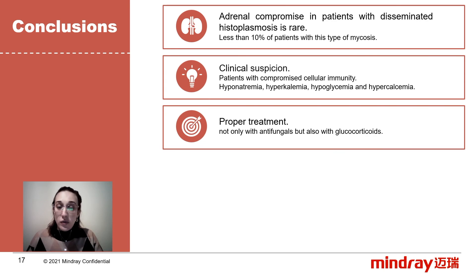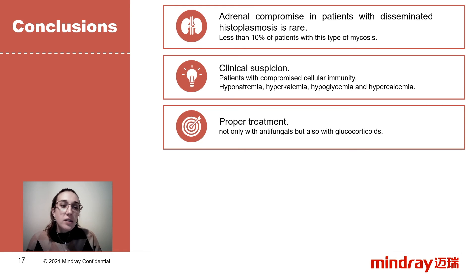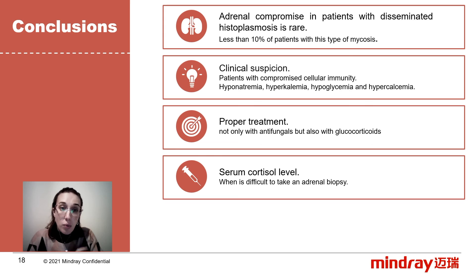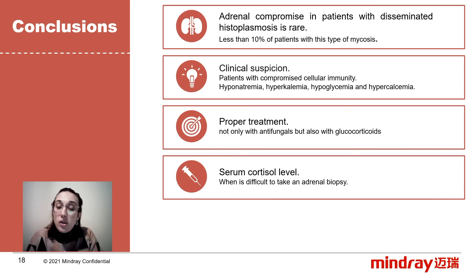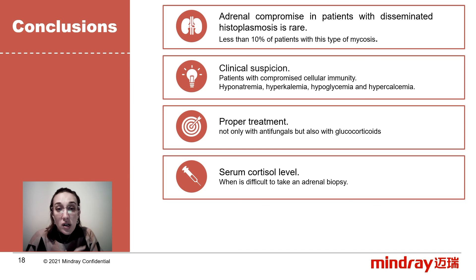Patients with adrenal insufficiency secondary to histoplasmosis must be treated not only with antifungals but also with glucocorticoids. It is crucial to remember that treatment only with antifungals will not prevent the development of an acute adrenal crisis. As patients with AIDS and histoplasmosis usually have a deteriorated health condition and it is very difficult to take samples for a biopsy, it is essential to check their serum cortisol level. A low level less than 3 micrograms per deciliter is highly suggestive of adrenal insufficiency.